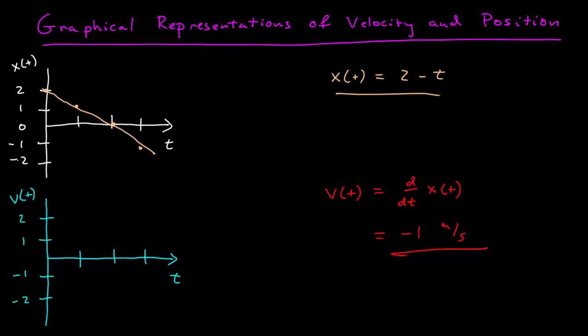The velocity as a function of time is constant. So if I were to plot that, it would be a straight line at negative 1. It's constant. As time goes along, the velocity doesn't change. It's a vector, so it has a magnitude of 1, and it points in the negative x direction.